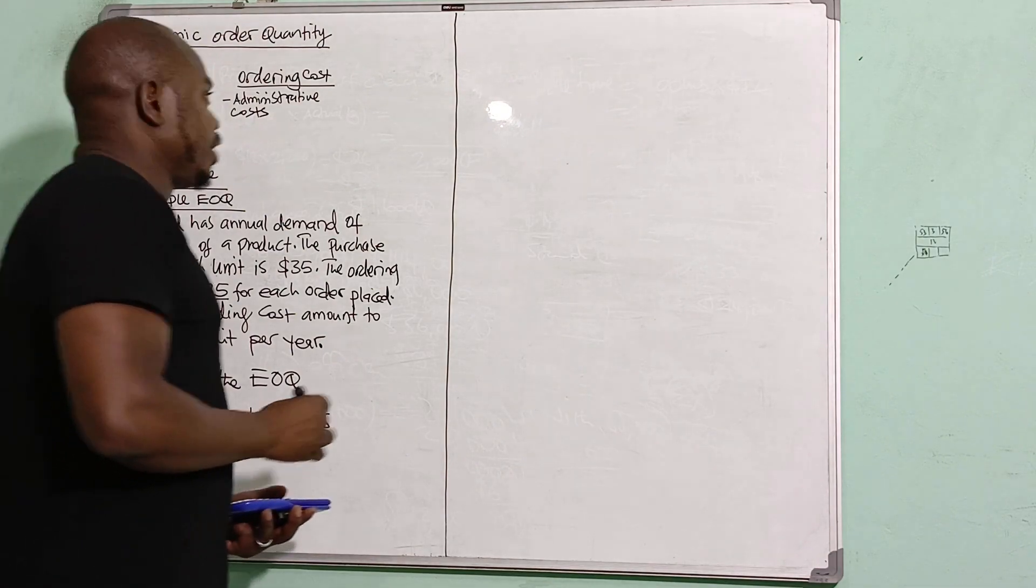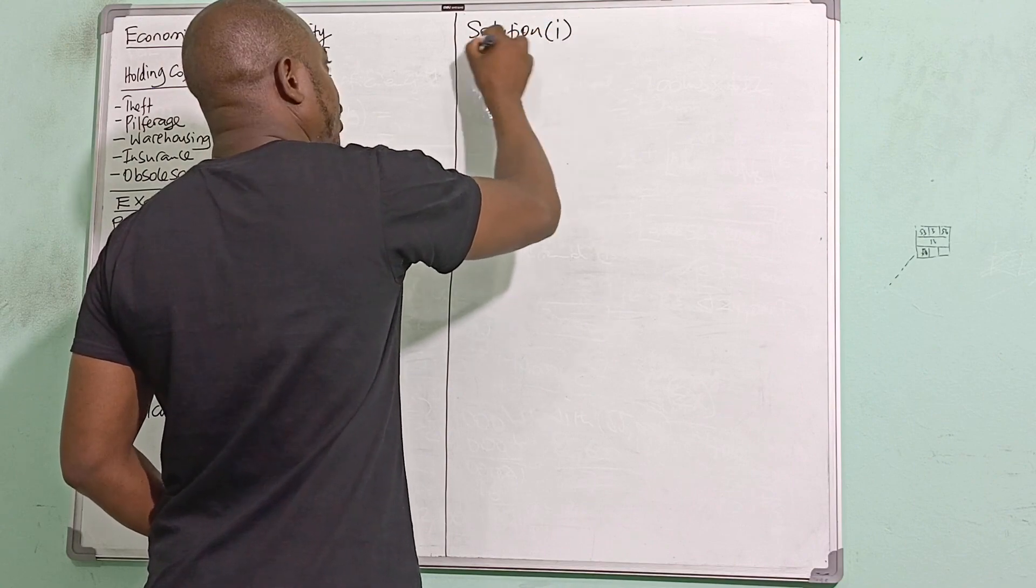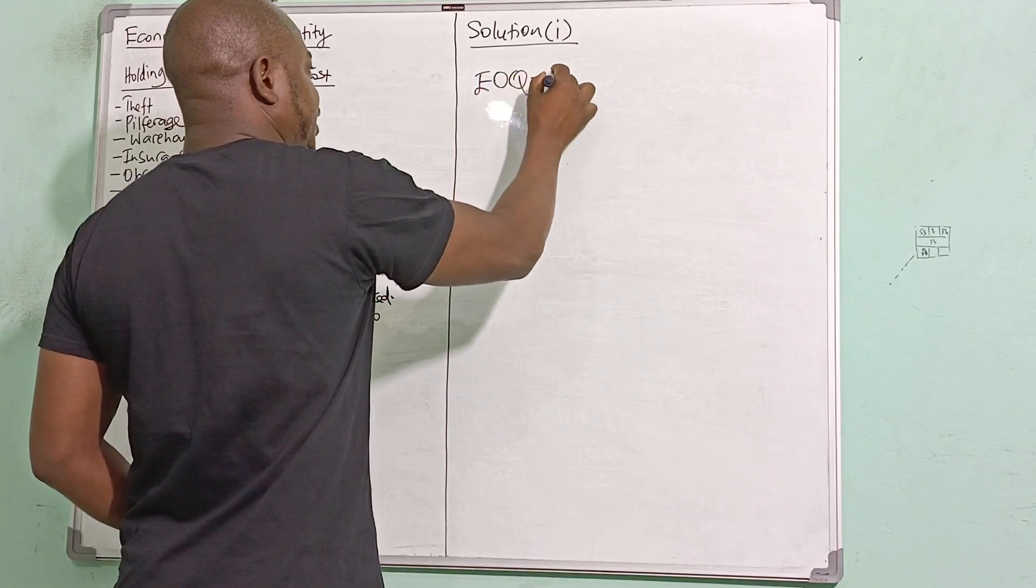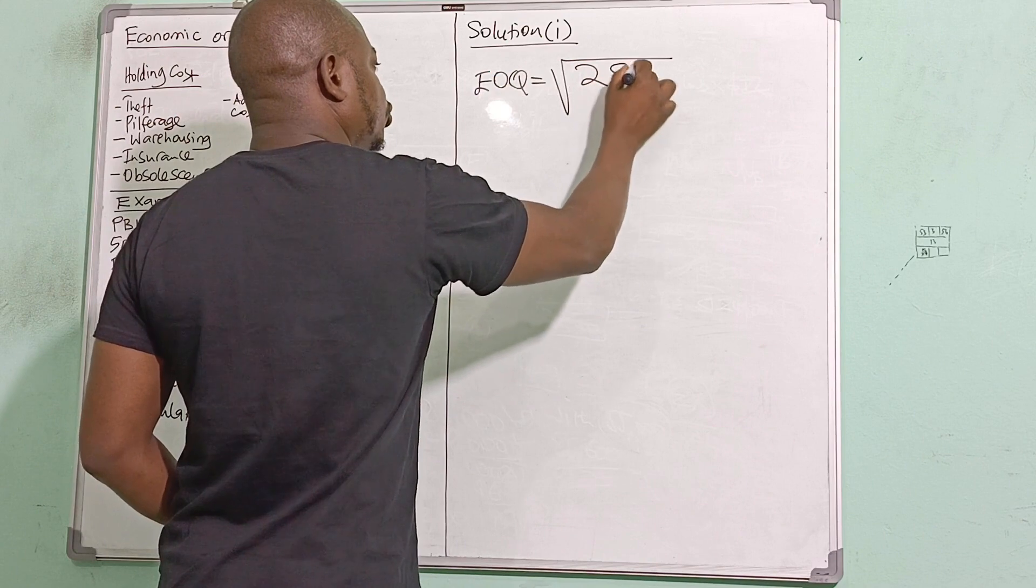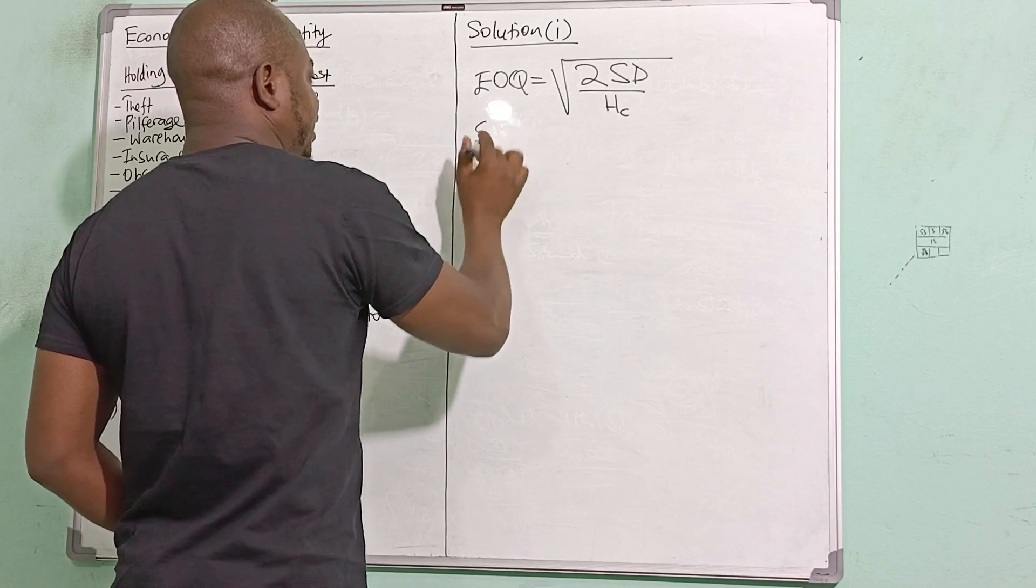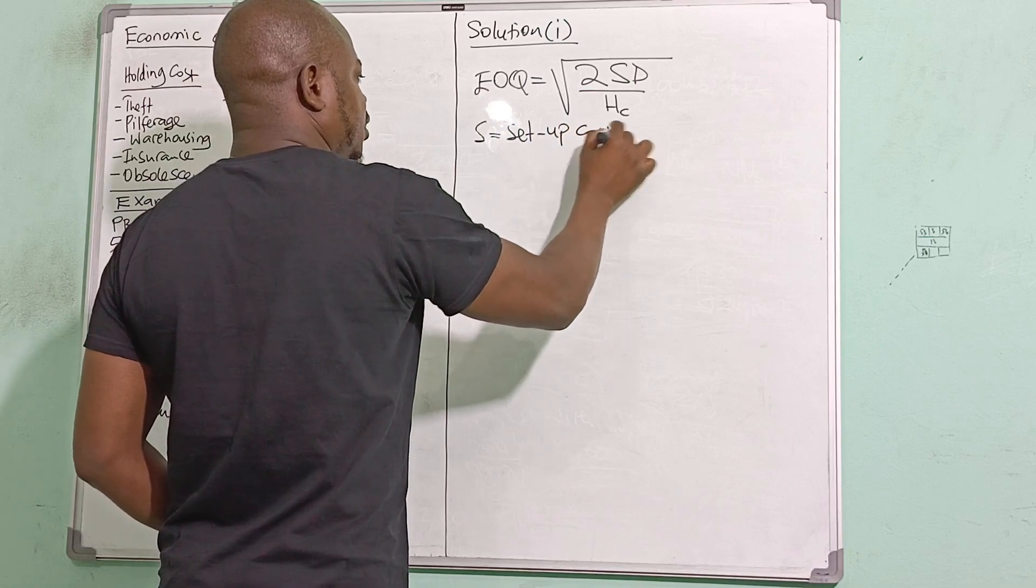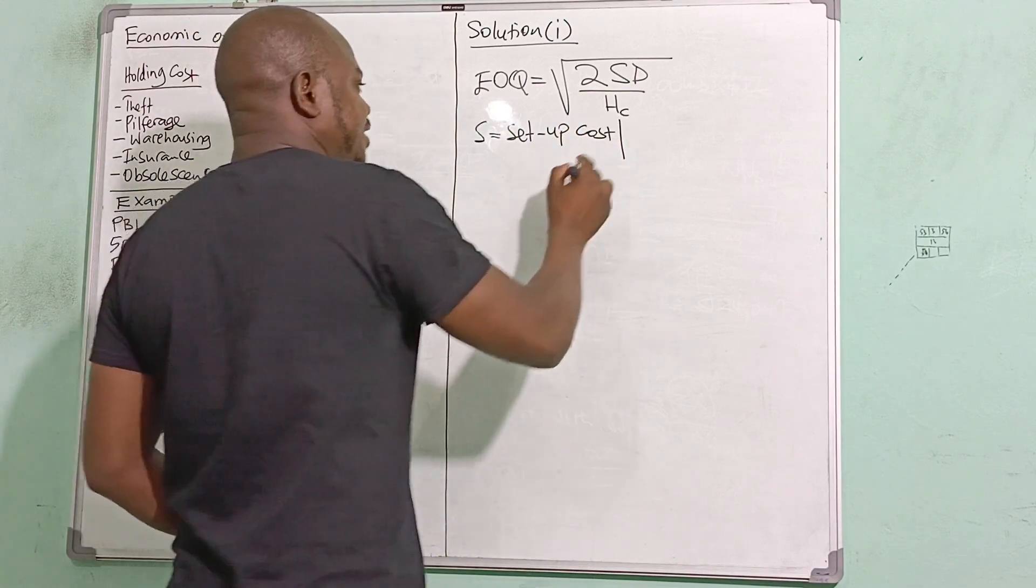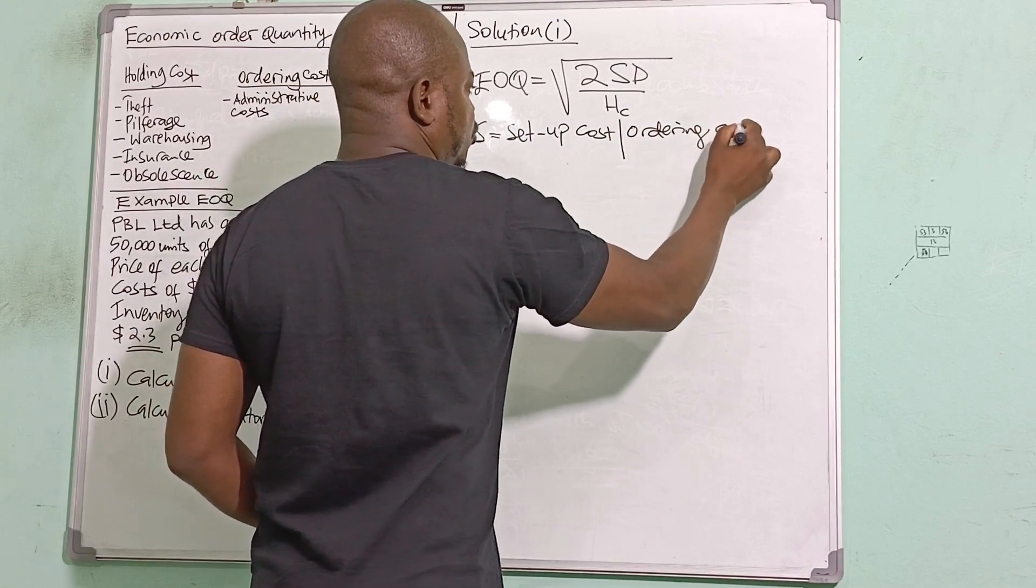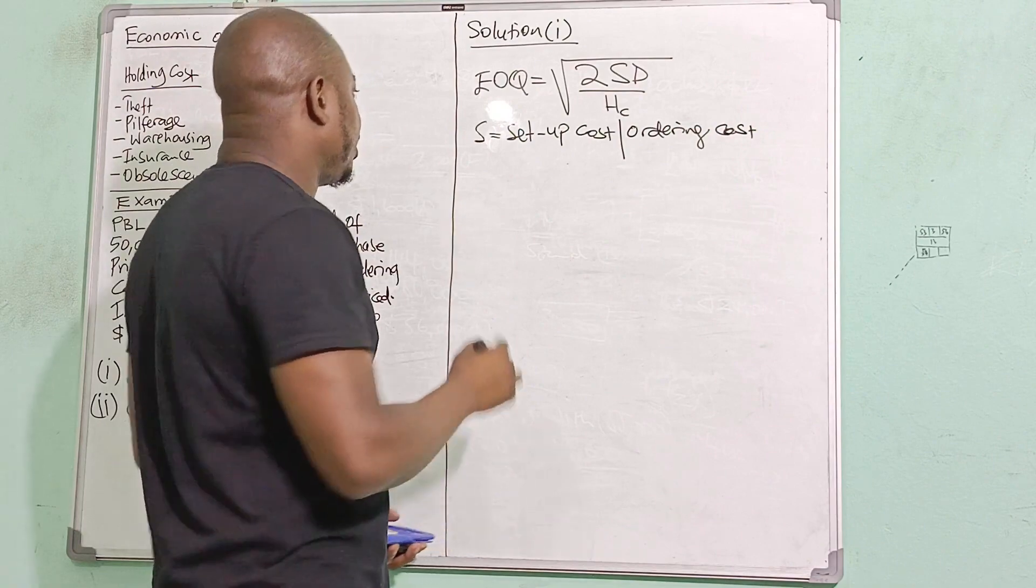Solution—calculate the EOQ. EOQ is basically square root of 2SD over HC. Where S is basically the setup cost or ordering cost, so that's the cost of placing an order, which is the S, or the setup cost as the case would be.